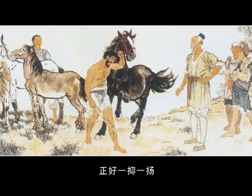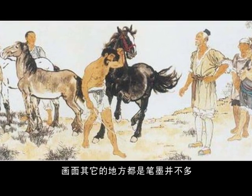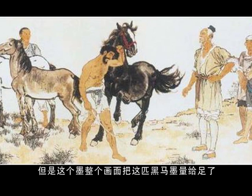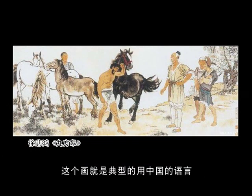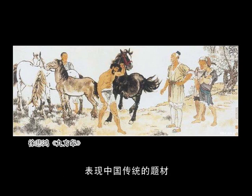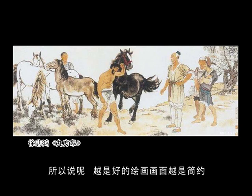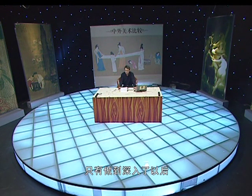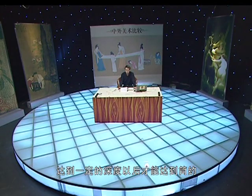徐悲鸿先生在《九方皋》中，画面中间这一匹大的黑马，一看太精神了，跟周围的马个儿都比它小，尾巴那种摆动起来，一看就是一匹好马。而且马头高高扬起，牵马的人头是低下来的，正好形成对比。这个画面其他地方给墨并不多，可以说叫惜墨如金，但是整个画面把这匹黑马的墨量给足了。这幅画就是用中国的语言表现中国传统的题材，最后具有中国精神。越是好的绘画，越是简约；简约不等于简单，简约是深入高层次的一种表现，只有首先做到深入、达到一定深度以后才能达到简约。今天我们鞍马的第一讲就讲到这儿，下一节课继续，谢谢。